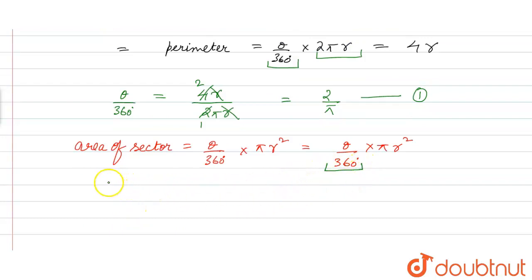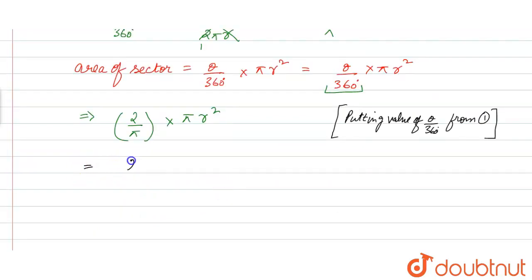We have theta by 360 is equal to 2 upon π, into πr². On solving this we get 2 upon π into πr², so π and π will cancel out. The answer will be 2r². So option b is the answer.